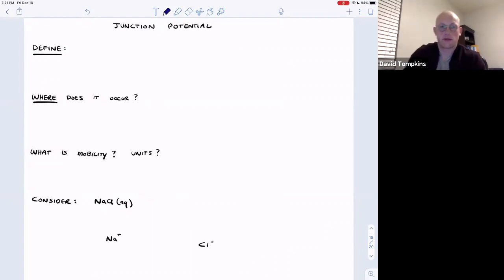So in this video we're going to talk about a junction potential which I alluded to in a couple previous lectures about the silver silver chloride and the calomel electrodes.